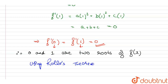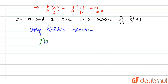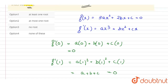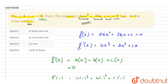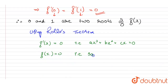Rolle's theorem says that if F(x) = ax cubed plus bx squared plus cx equals 0, and we have found that F(0) = F(1) = 0, then f(x), the derivative, which is 3ax squared plus 2bx plus c, must equal 0 at some point in the interval.